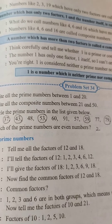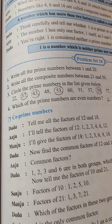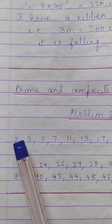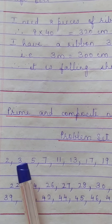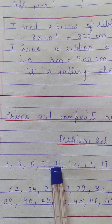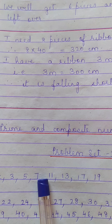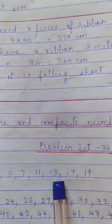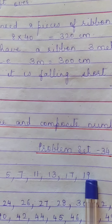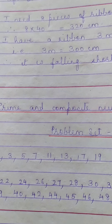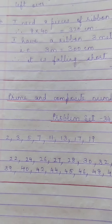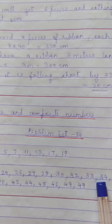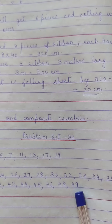Problem Set 34, Question 1: prime numbers between 1 and 20 are 2, 3, 5, 7, 11, 13, 17, 19. Numbers like 8 (factors: 1, 2, 4, 8) and 9 (factors: 1, 3, 9) have more than two factors so they are composite, not prime. Question 2: write all composite numbers between 21 and 50 — these are numbers with more than two factors. Try it yourself and check your answer.